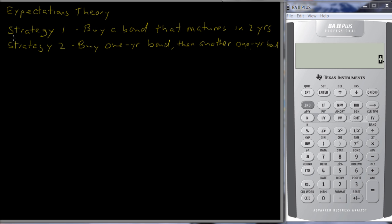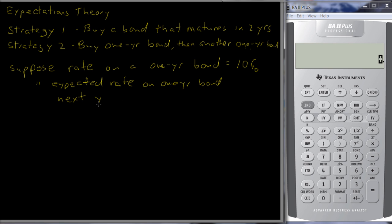All right, let's look at a numerical example. Suppose the rate on a one-year bond equals 10%. And that's the rate today. And then let's suppose that the expected rate on a one-year bond next year is expected to be 12%.